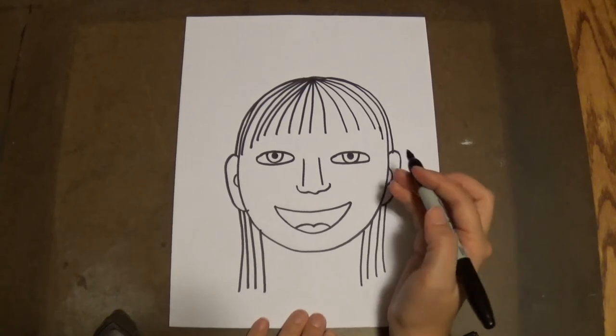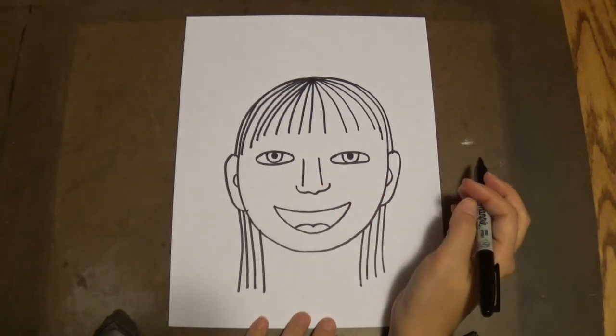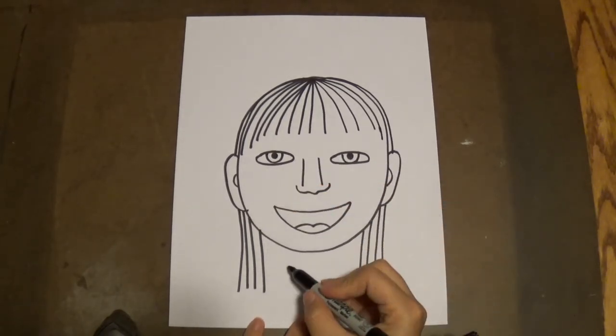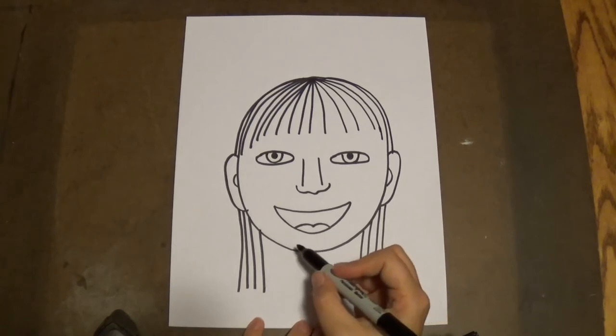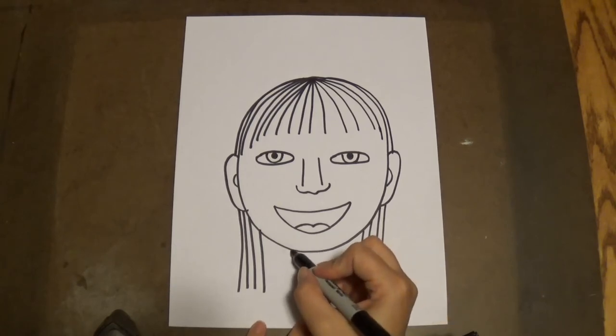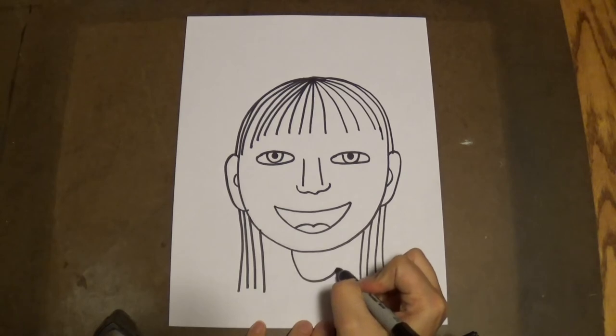So I have my beautiful picture. And the last thing you're going to do is draw a neck. So to draw a neck you're just going to make a half circle down here like this.